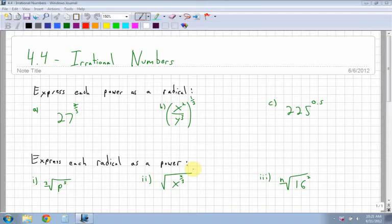Okay, chapter 4.4, Irrational Numbers, is kind of a big chapter. There's a lot packed into one section. So what I'm going to do is work through three examples from each kind of different types of questions you'll have.